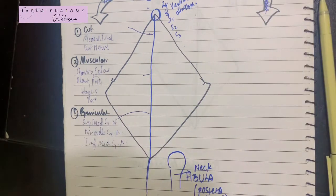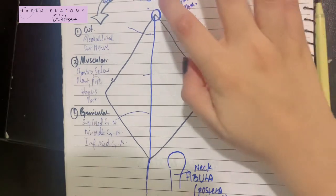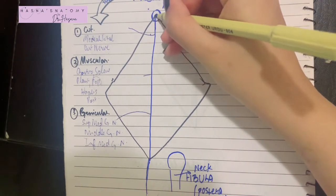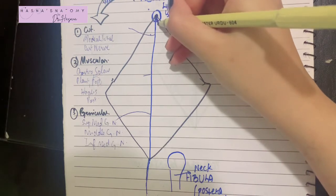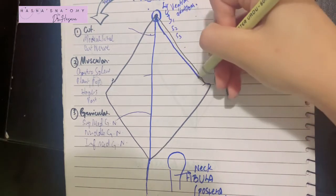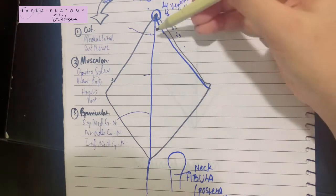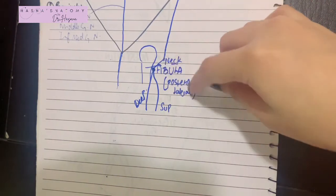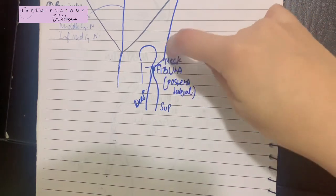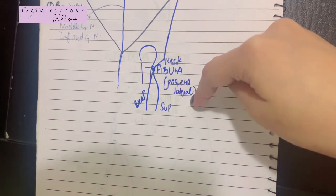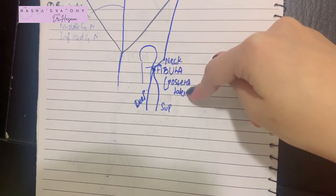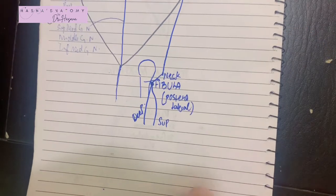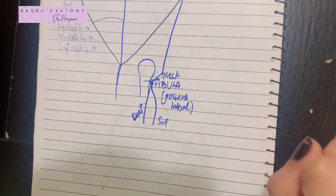Now let's talk about the common peroneal nerve. It originates from the sciatic nerve, with a root value from the dorsal divisions of L4, L5, S1, and S2. It begins at the superior angle of the popliteal fossa and runs to the lateral angle, then downwards to the posterolateral part of the neck of the fibula — you can actually palpate this nerve there. It then pierces the peroneus longus and terminates into its terminal branches: the superficial and deep peroneal nerves.